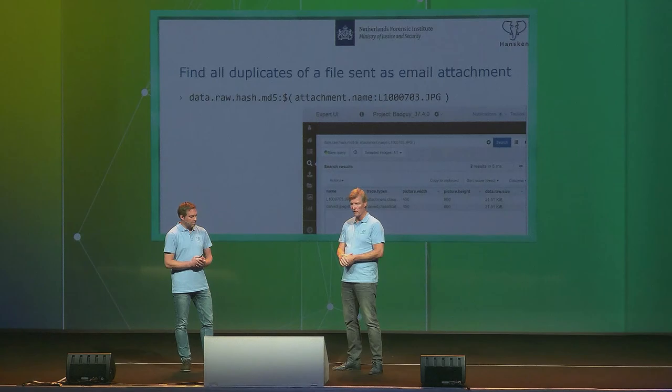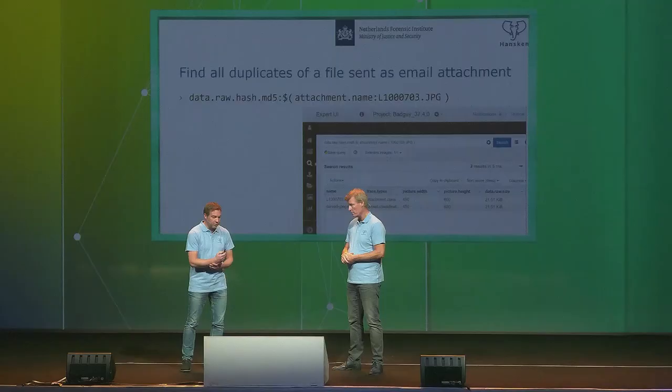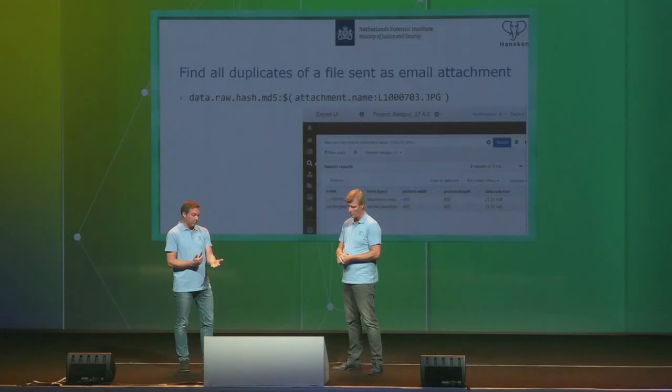This is very useful for data leakage cases: you can find a file on one system and check if it appears in an email or on another device. For example, with a USB drive containing five files, you can say: give me all traces with a matching MD5 or SHA-1, where the inner query specifies the USB drive device. Hansken then gets all MD5s from that USB drive and does a broad query across the entire dataset. It's just a one-liner but a very powerful backend operation.